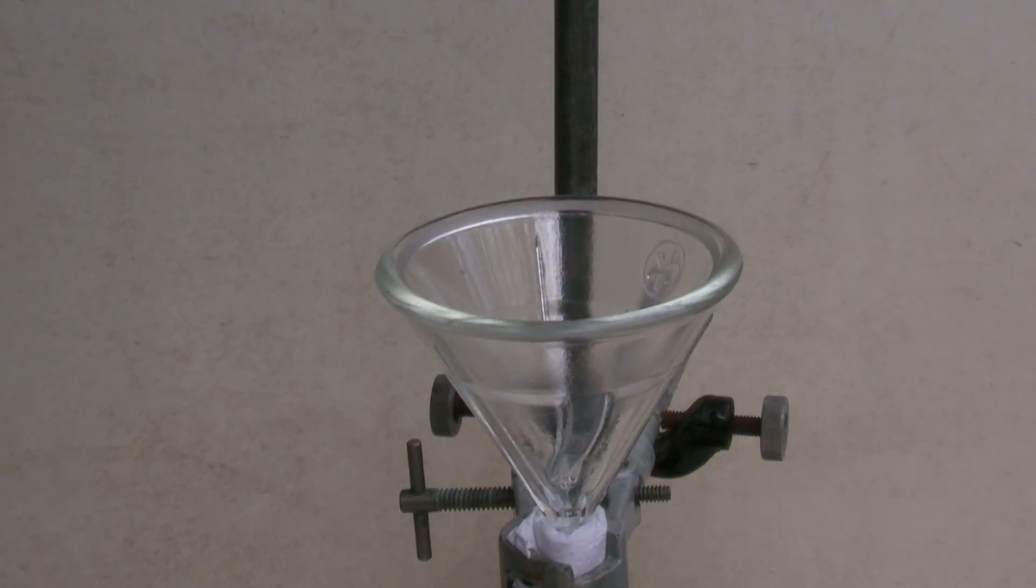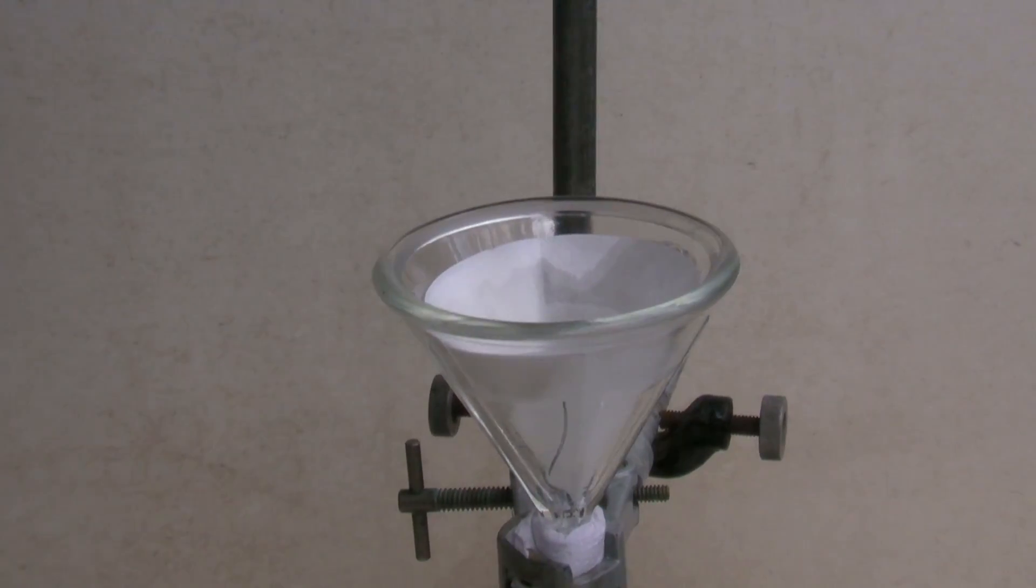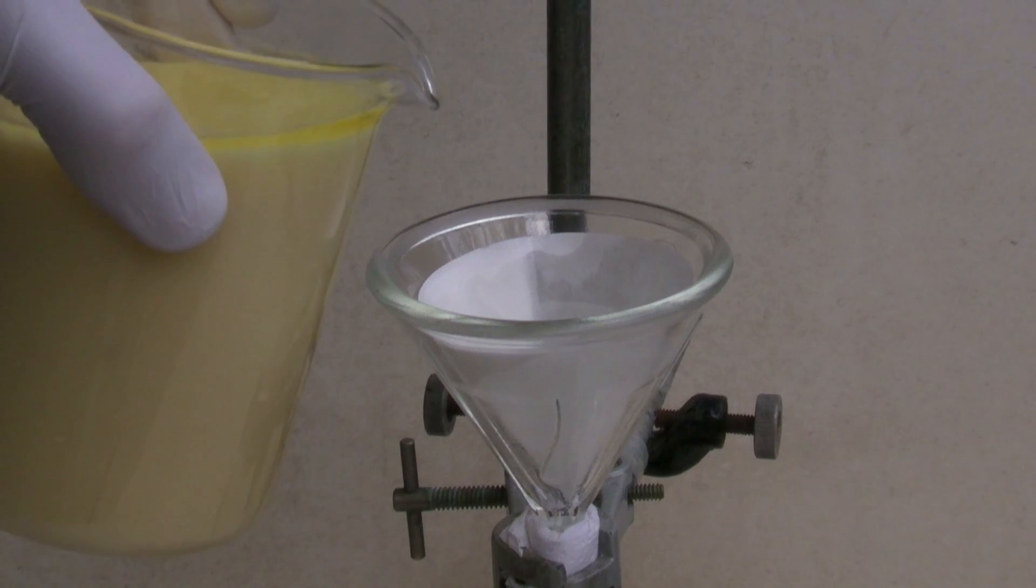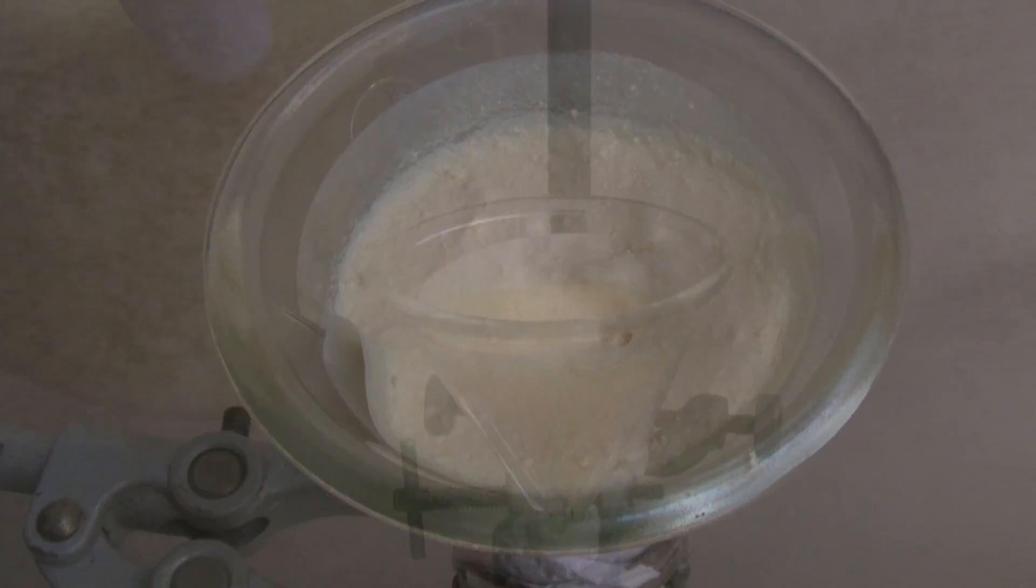Then the precipitate was filtered off. A vacuum filtration with a Buechner funnel would be faster and more efficient. It was washed with a bit of distilled water to remove the majority of the acid.